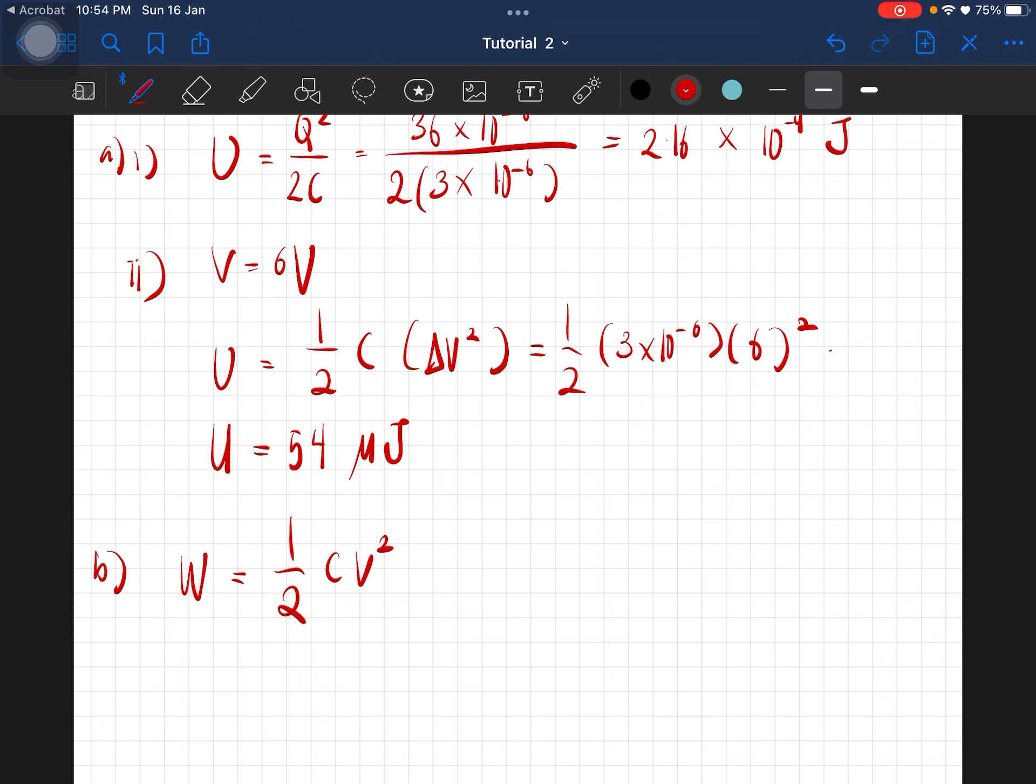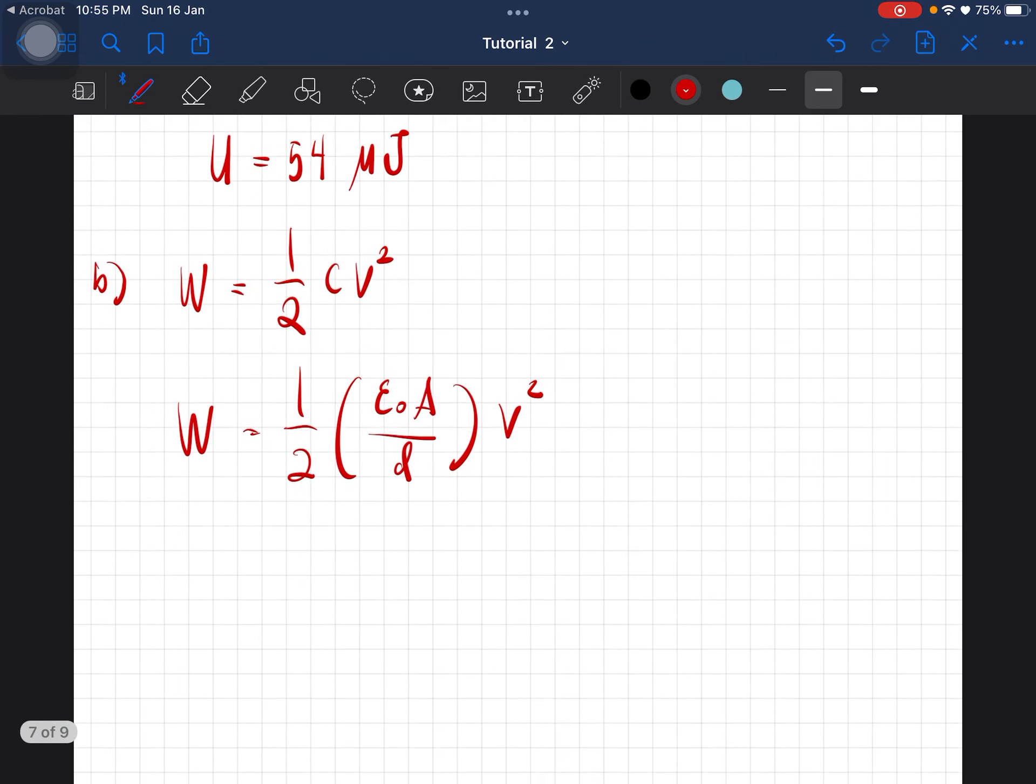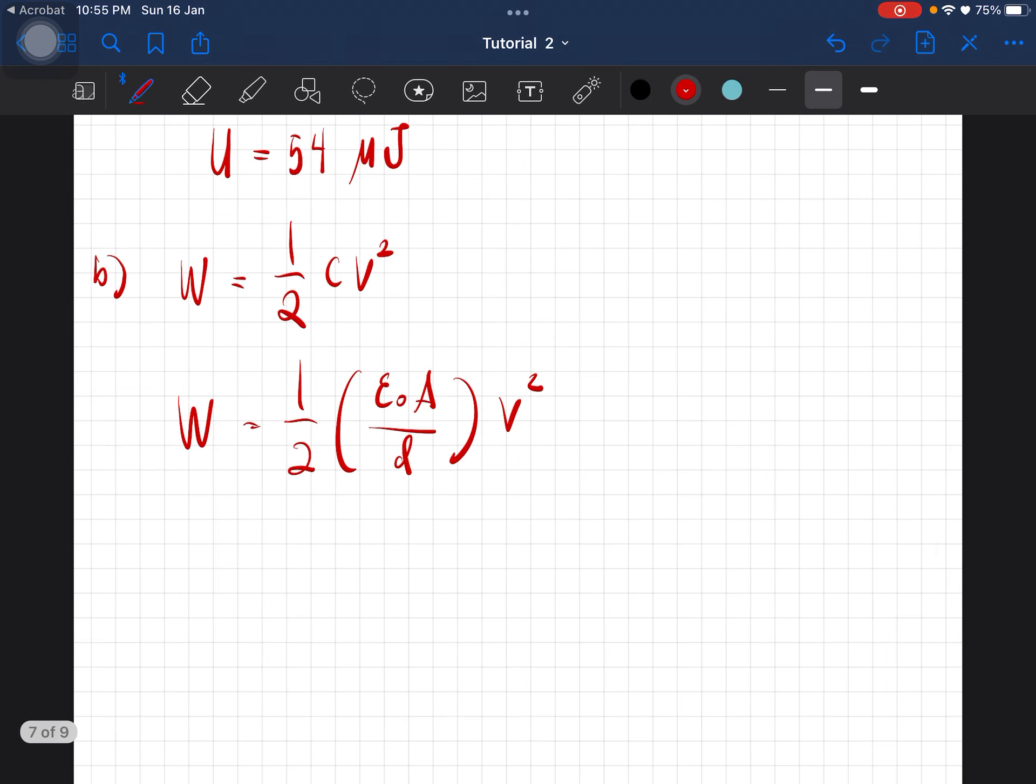So C here is just basically epsilon naught A over D and V squared. So from here just substitute all the values needed and you should get 2.55 times 10 to the negative 11 joules.